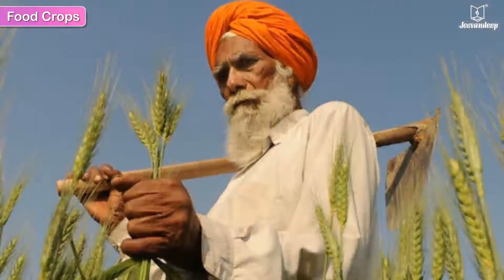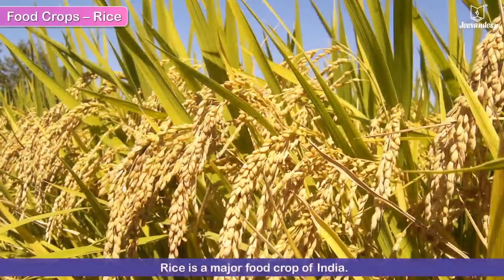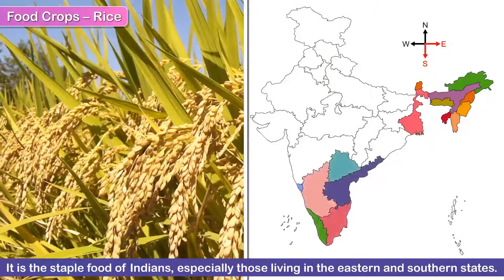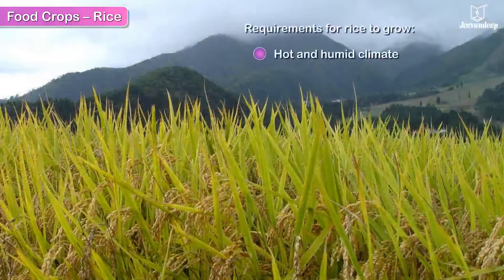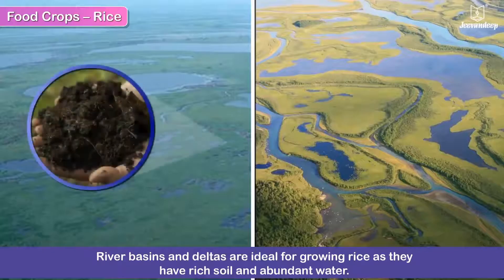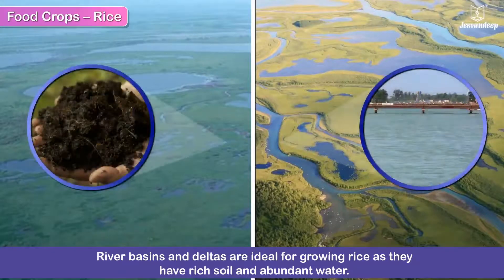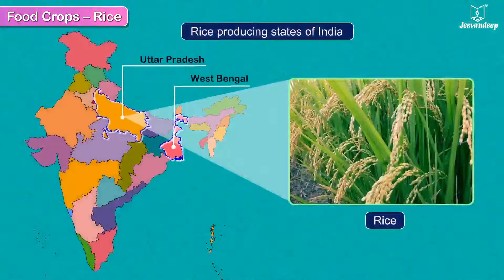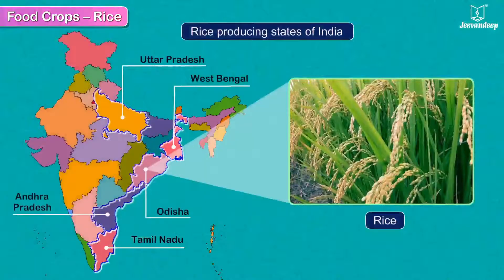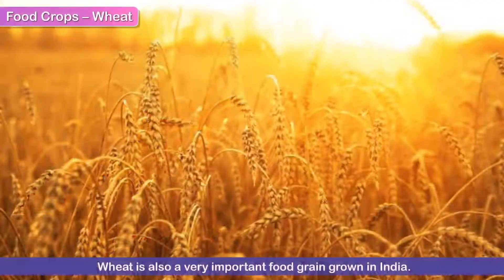Wheat, rice, different kinds of cereals, pulses, and millets are some important food crops. Rice is a major food crop of India — it is the staple food of Indians, especially those living in the eastern and southern states. Rice needs a hot and humid climate and abundant rainfall. River basins and deltas are ideal for growing rice as they have rich soil and abundant water. West Bengal, Uttar Pradesh, Tamil Nadu, Andhra Pradesh, and Odisha are leading producers of rice.